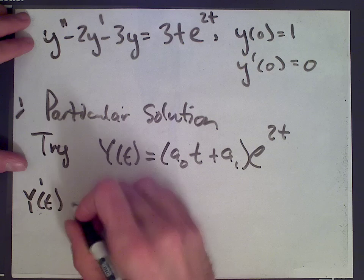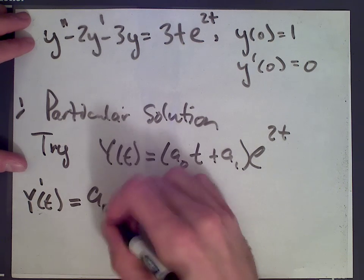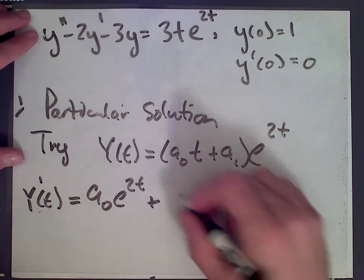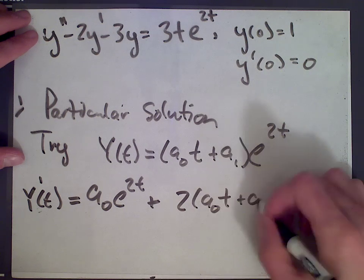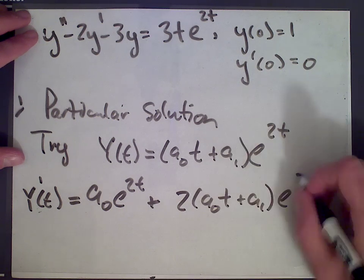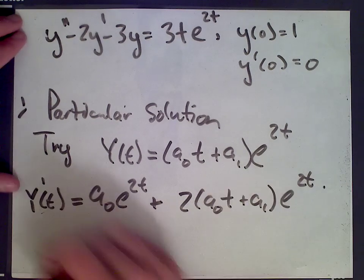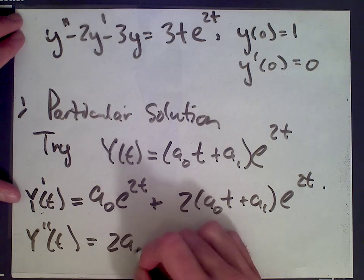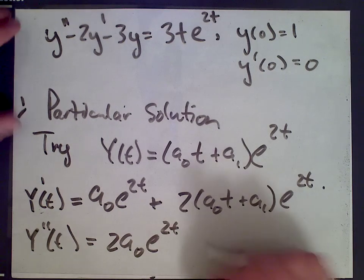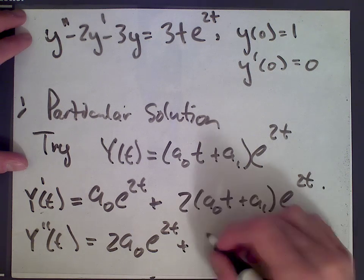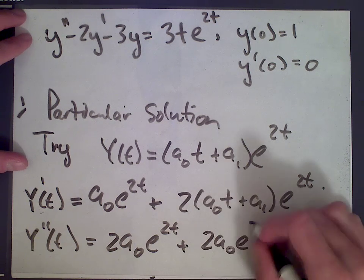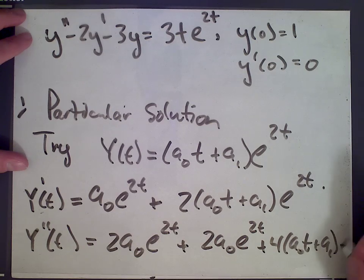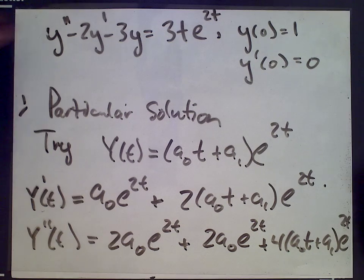y prime of t, by the product rule, is a0 e to the 2t plus 2a0t plus a1 times e to the 2t. Then y double prime is 2a0 e to the 2t plus 4 times a0t plus a1 times e to the 2t.